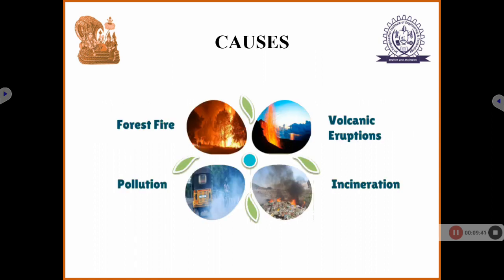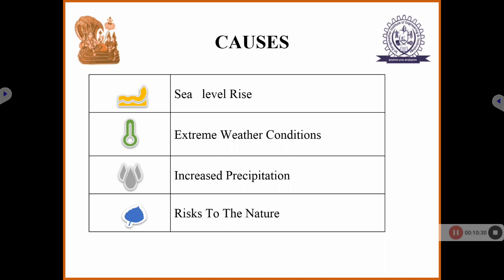Causes of climate change include volcanic eruption, which creates very high heat temperatures in surrounding areas. Burning of waste creates air pollution, which affects the water cycle and rainfall. Forest fires destroy trees, and deforestation also contributes. Pollution from various sources — all of these affect our nature. The main thing lost is trees, and when forest fires occur and trees get destroyed, it accelerates climate change.